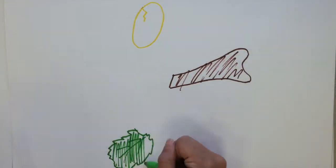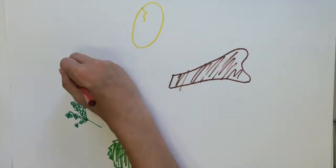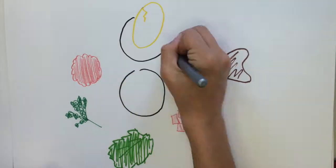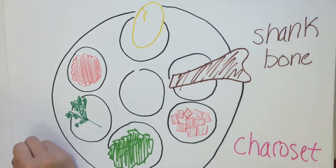At a Seder, there is a special plate of food on the table called the Seder plate. All of the foods on the Seder plate are symbols that represent a part of the Passover story.